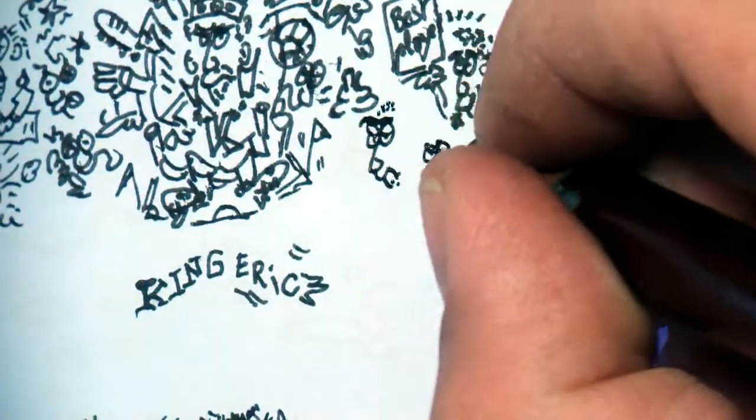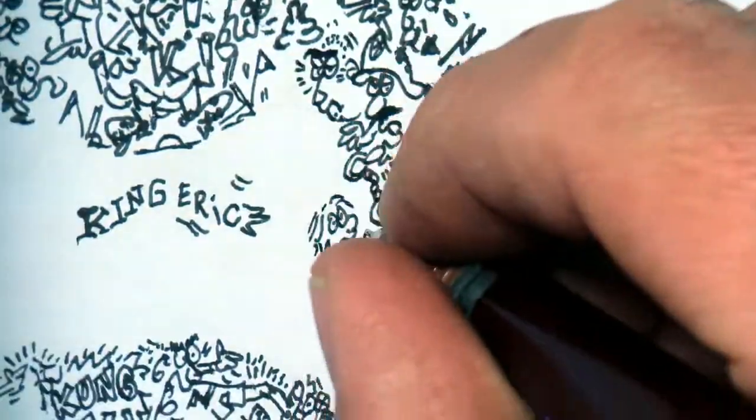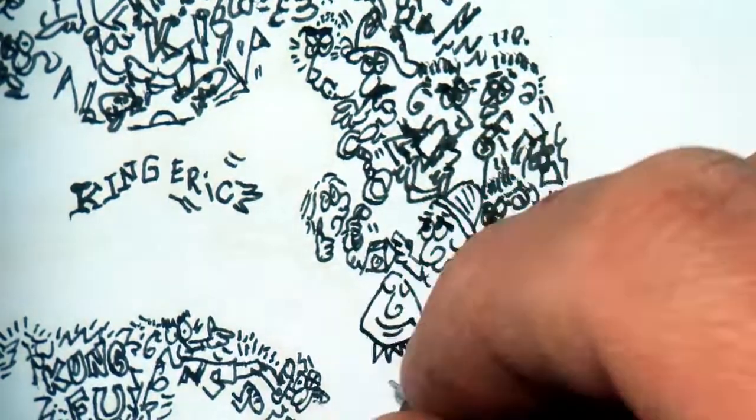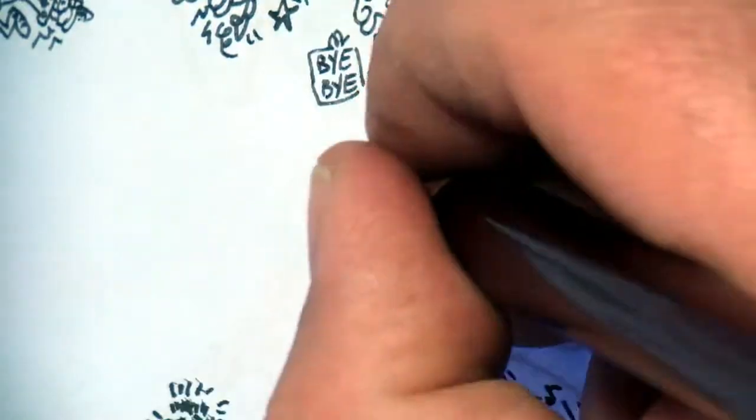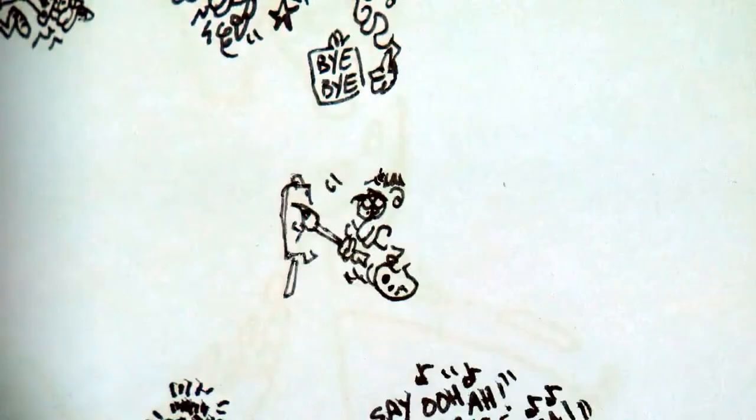The Cantona affair causes a lot of noise. Even the French president gets involved to help him avoid prison. The angry child devotes himself to his other passions: painting, promoting beach football, and cinema.